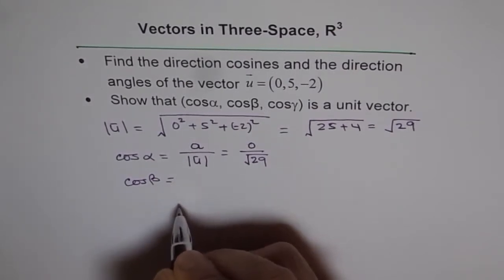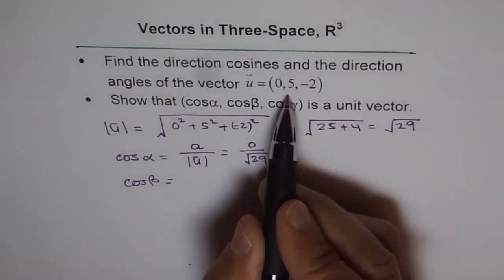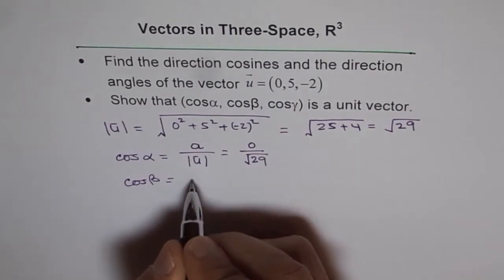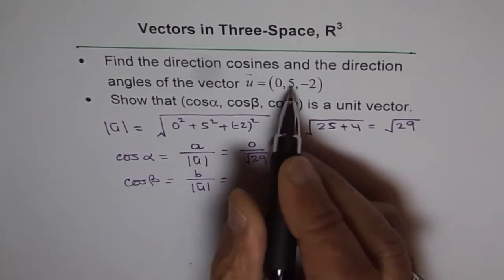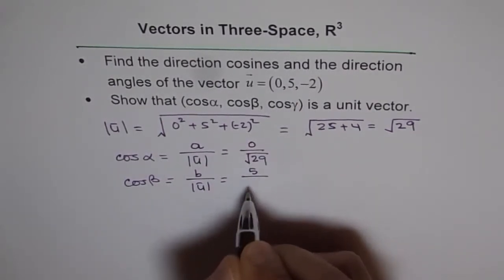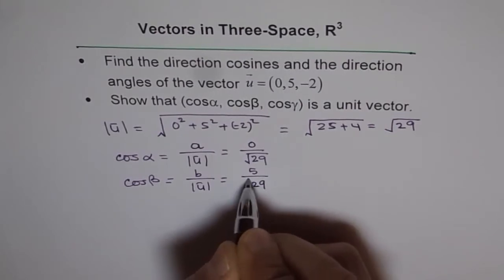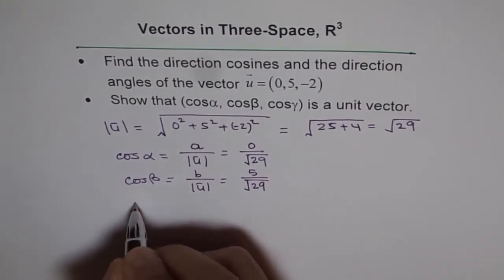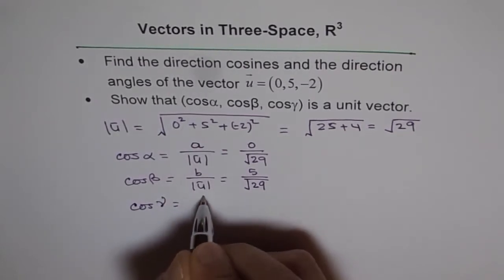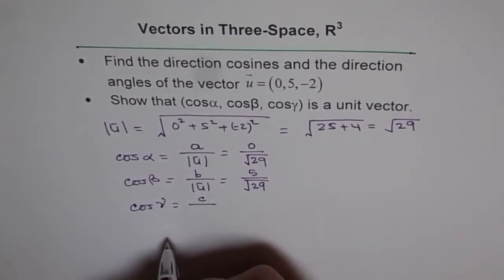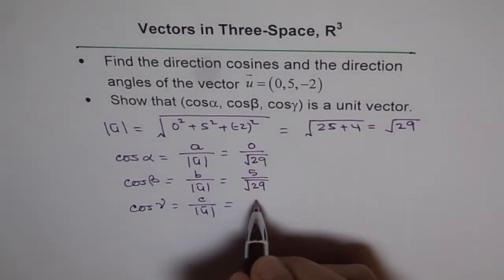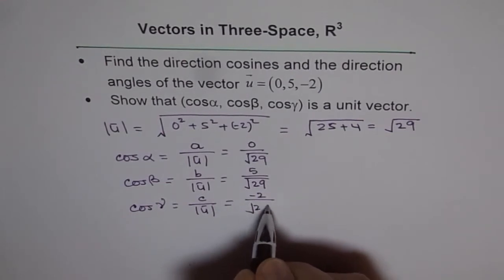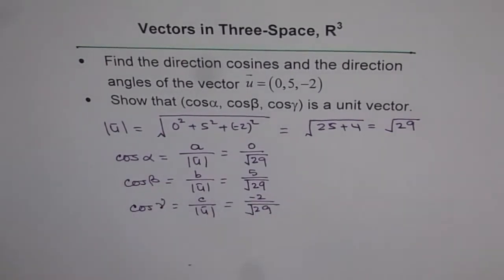What is cos β? Cos β is the component along the y-axis, which is 5. The formula is B / |u|, so 5 over √29 — that is cos β. How about cos γ? That is the component along the z-axis divided by the magnitude of the vector. In this case it is -2, so we get -2 over √29. These are all our direction cosines.